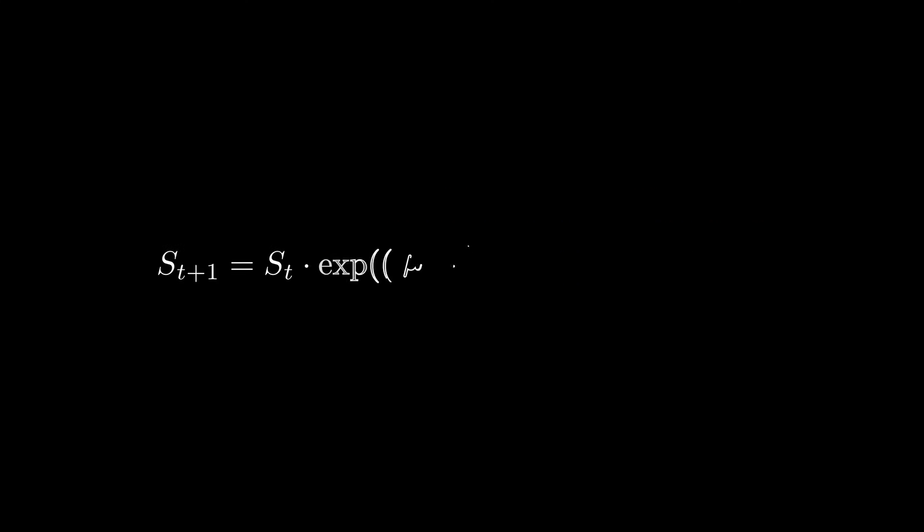This is the discretized update equation for geometric Brownian motion. It may look daunting, but it's actually quite simple. S_t is the price process that we're simulating, and we can see from the equation that S_{t+1} is just a scaled version of S_t, which is why this update equation is called geometric.